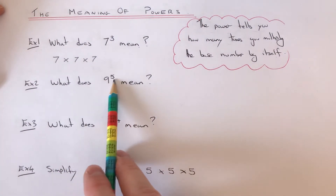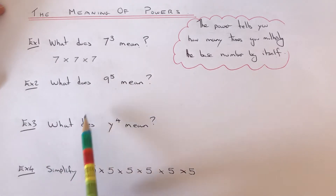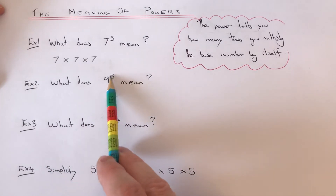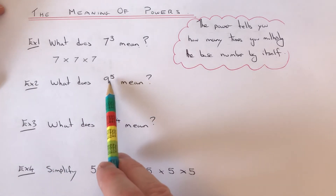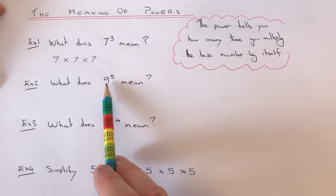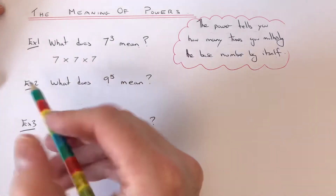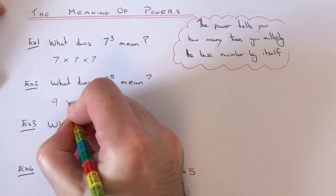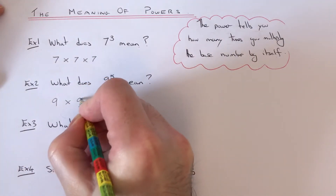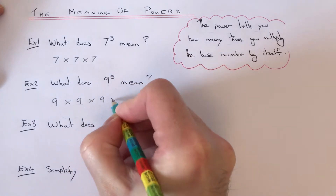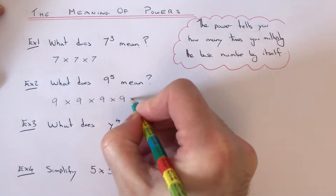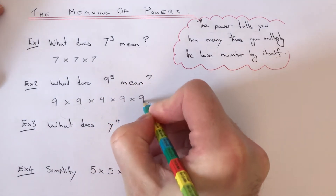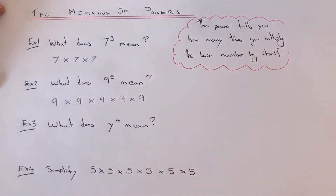Let's have a look at example two. What does nine to the power of five mean? The power this time is five, so we need to multiply the nine by itself five times — so it would be nine times nine times nine times nine times nine.